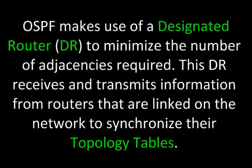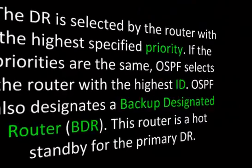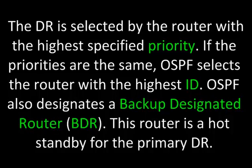OSPF makes use of a designated router or DR to minimize the number of adjacencies required. This DR receives and transmits information from routers that are linked on the network to synchronize their topology tables. The DR is selected by the router with the highest specified priority. If the priorities are the same, OSPF selects the router with the highest ID. OSPF also designates a backup designated router or BDR, which is a hot standby for the primary DR.